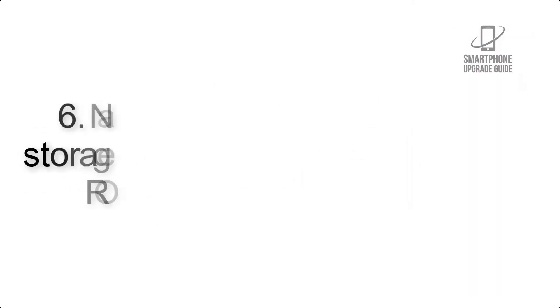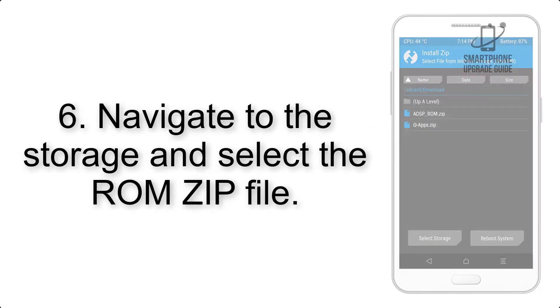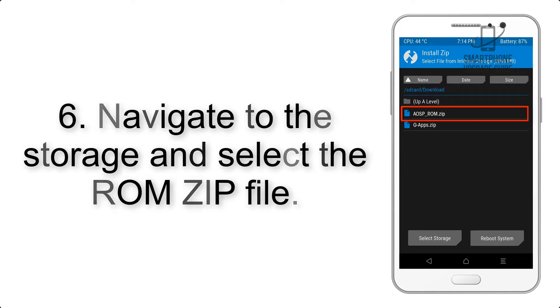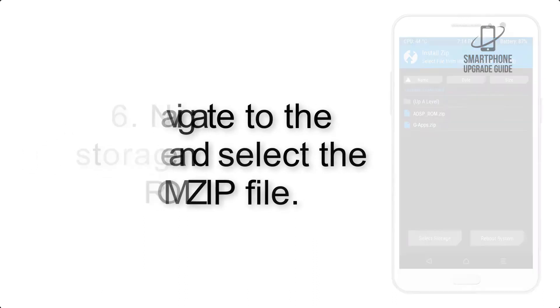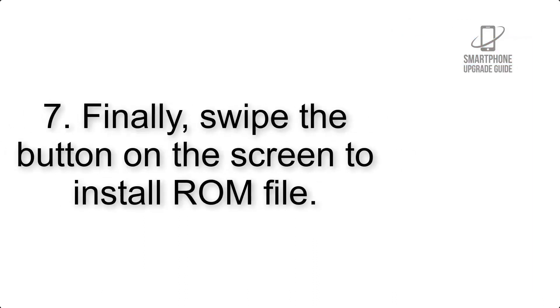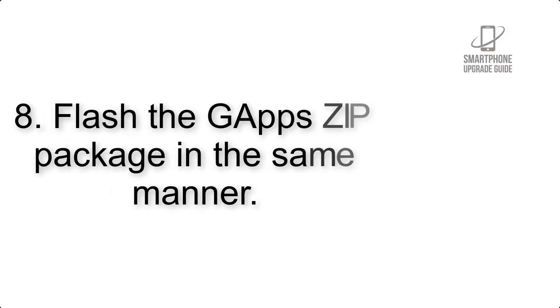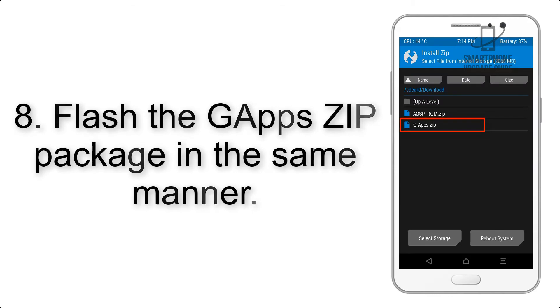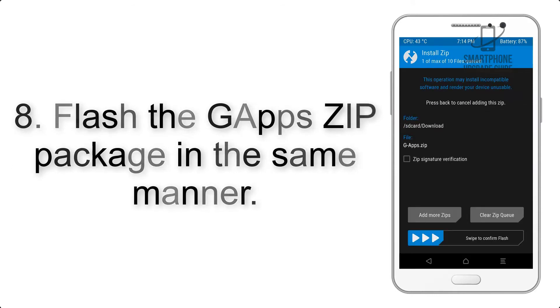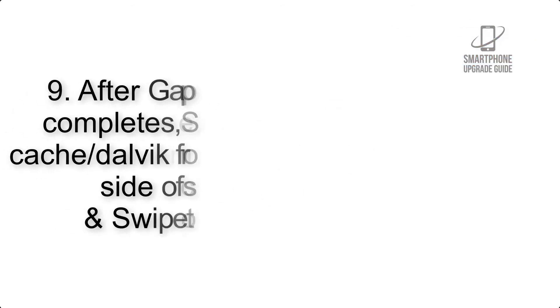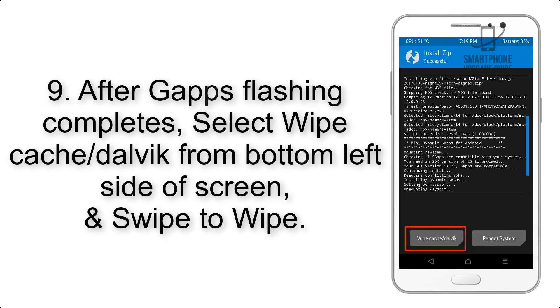Step 5: Go back to the recovery main screen and tap on the Install button. Step 6: Navigate to the storage and select the ROM zip file. Step 7: Swipe the button on the screen to install the ROM file. Step 8: Flash the GApps zip package in the same manner.